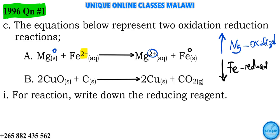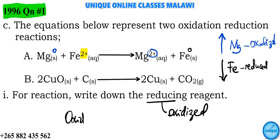A reducing agent is a substance or an element which has been oxidized. The reducing agent is the one that causes something else to be reduced, whereas an oxidizing agent is the one that has been reduced - it causes something else to be oxidized.